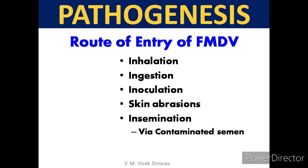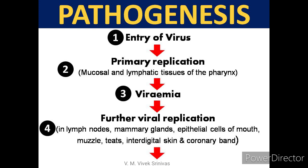Pathogenesis: This virus has many portals of entry — inhalation, ingestion, inoculation, skin abrasions, and insemination with FMD virus-contaminated semen. Following entry, the virus undergoes primary replication at the mucosal and lymphatic tissues of the pharynx, followed by viremia. Secondary replication then occurs at lymph nodes, mammary glands, epithelial cells of the mouth, muzzle, teats, inner digital skin, and coronary band.